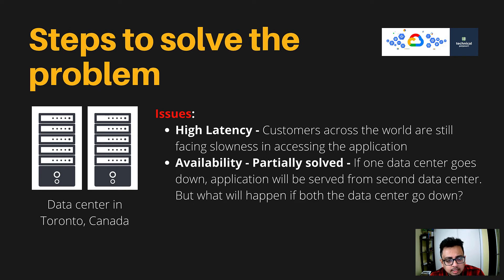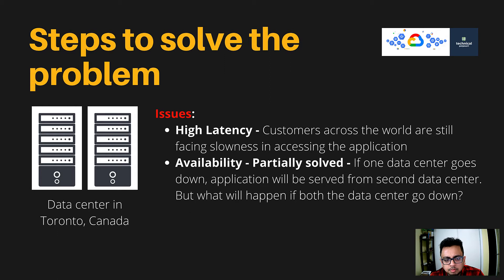What they did is create one more data center in Toronto, Canada. With that, high latency is still there because customers accessing the website from other parts of the world like Australia, India, or New Zealand will still face slowness. Availability is partially solved — if one data center goes down, the application can still be served from the other — but if both go down, the problem remains.